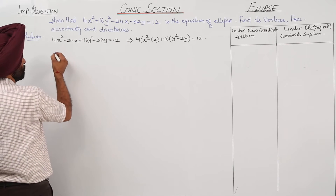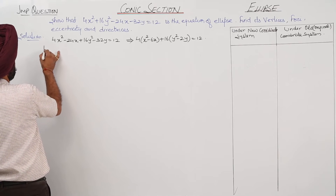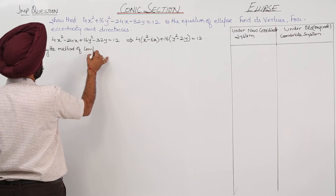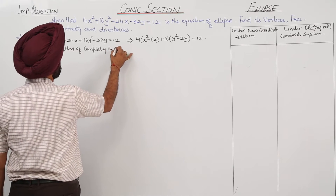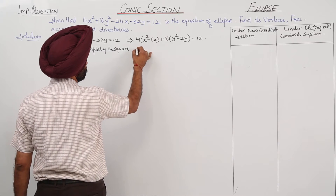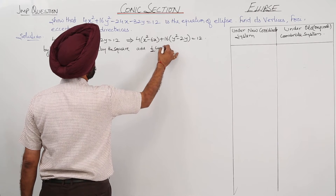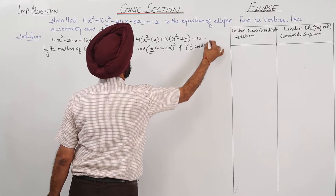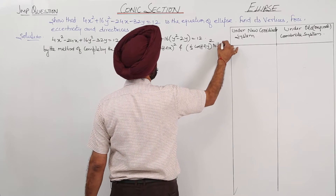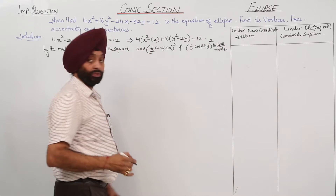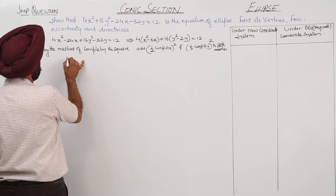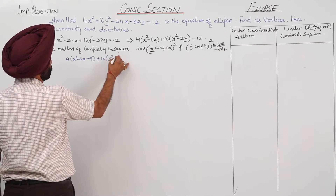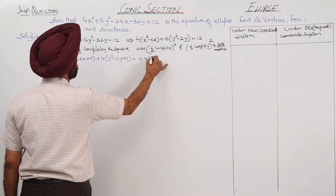By the method of completing the square, we add half the coefficient of x, whole squared, and half the coefficient of y, whole squared, to both sides. So we get: 4(x² − 6x + 9) + 16(y² − 2y + 1) = 12 + 36 + 16.